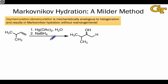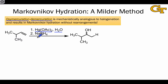The full name for this reaction is oxymercuration-demercuration, with oxymercuration referring to the first stage in which the alkene is treated with mercury diacetate and water, and demercuration referring to the second stage in which mercury is removed from the intermediate using sodium borohydride, the compound shown in step two here.